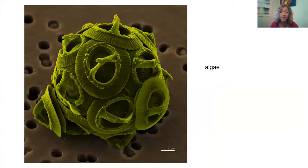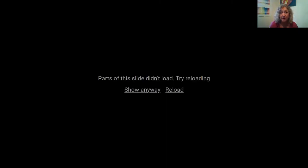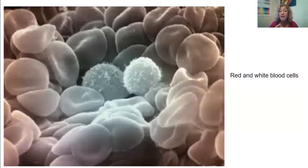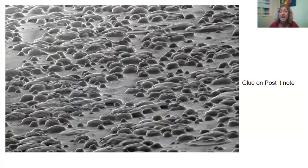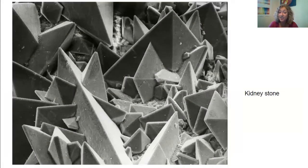Algae has beautiful symmetrical and cylindrical forms. Iron is very geometric in its shape. Red and white blood cells look distinctly different under an electron microscope. This is a common thing — glue on a post-it. When you really look, you'd never guess it looks like the surface of a planet. A kidney stone, again, is very geometric, and you can see how painful it would be if you passed one.